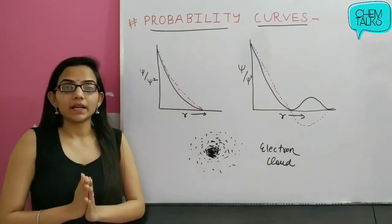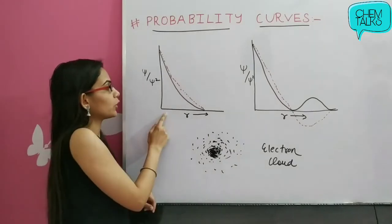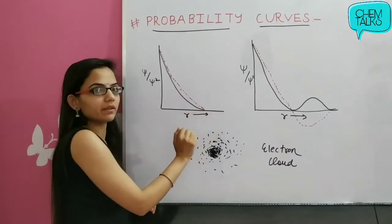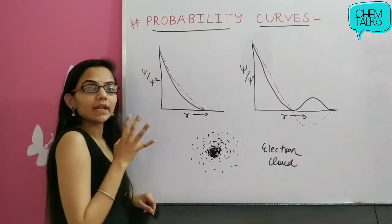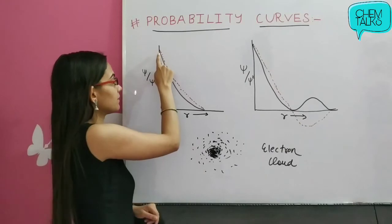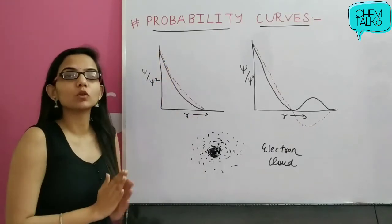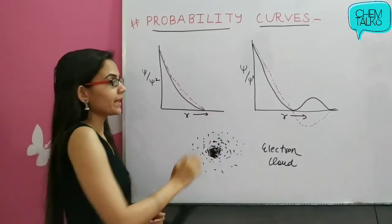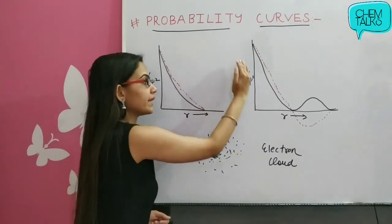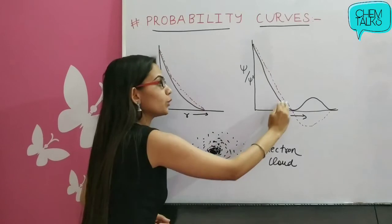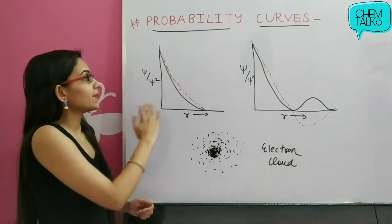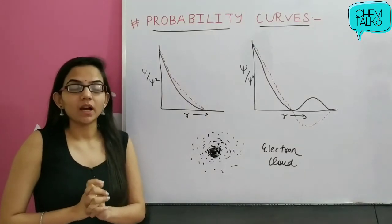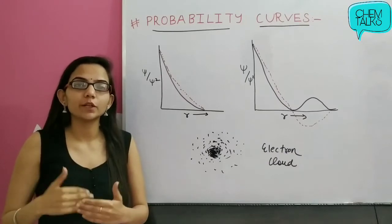What happened in this graph? We have seen that close to the nucleus, where r is minimum, the psi-square value is maximum — that is, the probability of finding the electron is maximum right at the nucleus. As the radius increases, the probability of finding the electron decreases. However, the significance of just psi-square alone was not so great, so a better approach is to discuss the radial probability distribution curve.